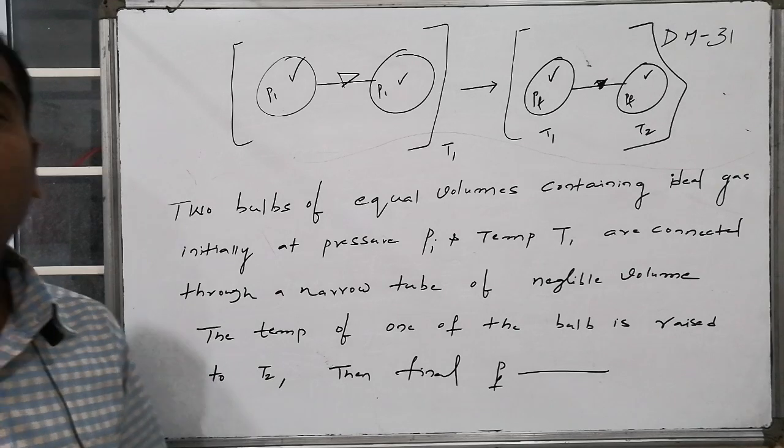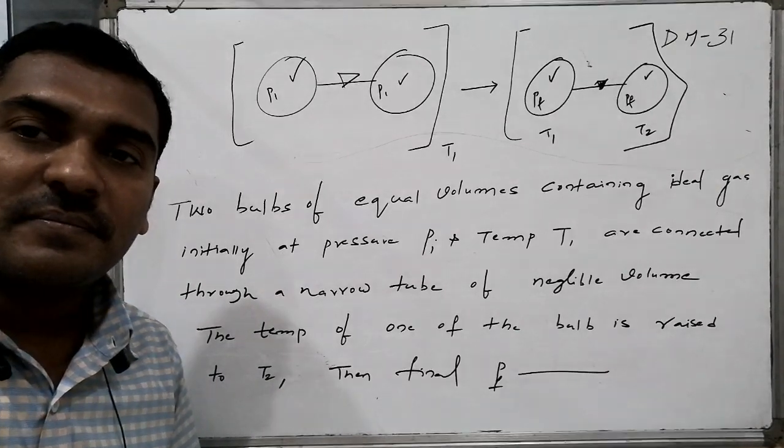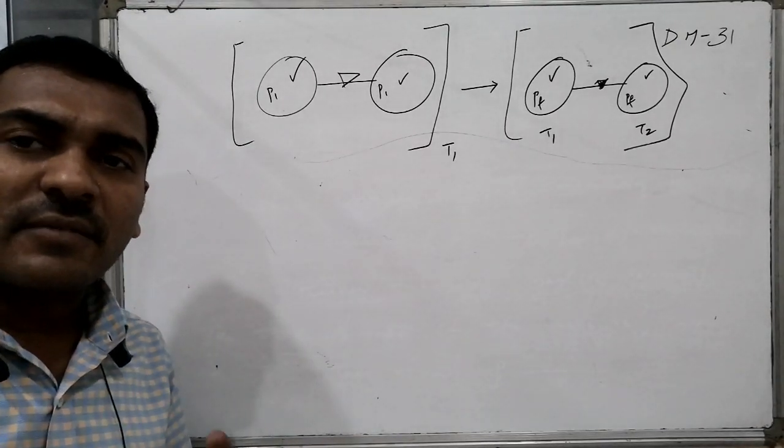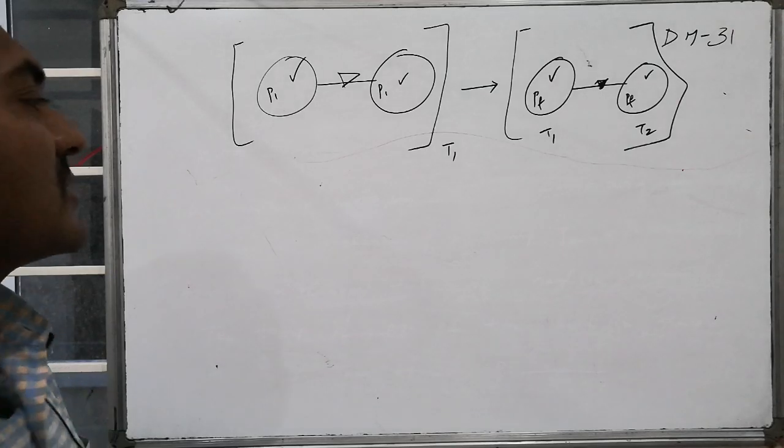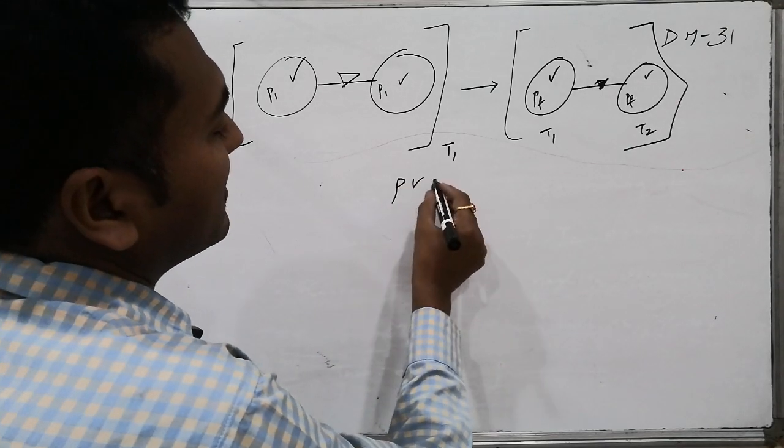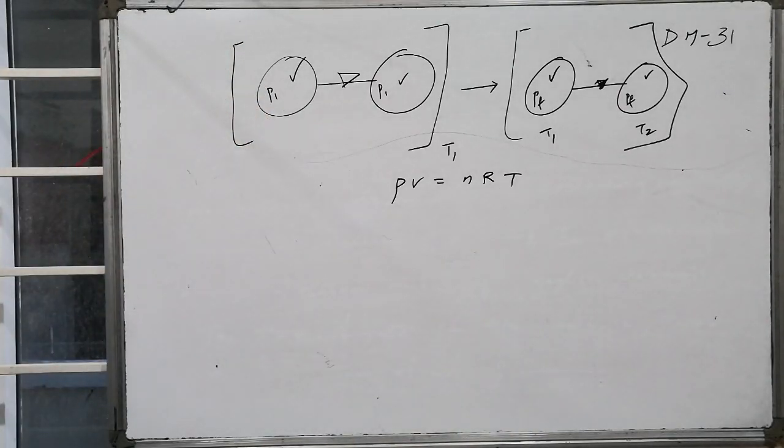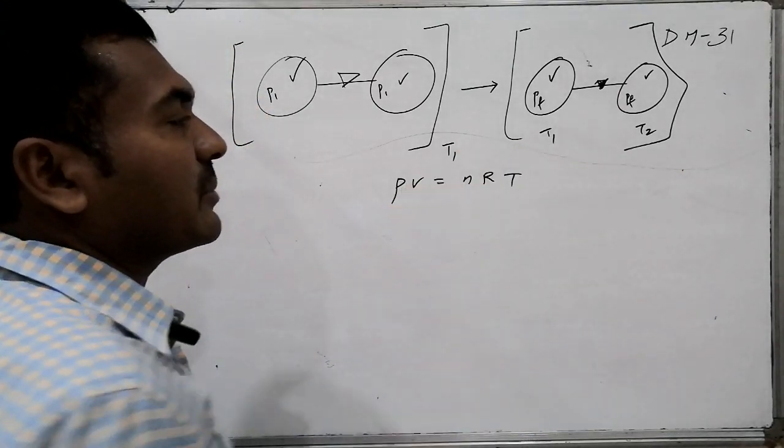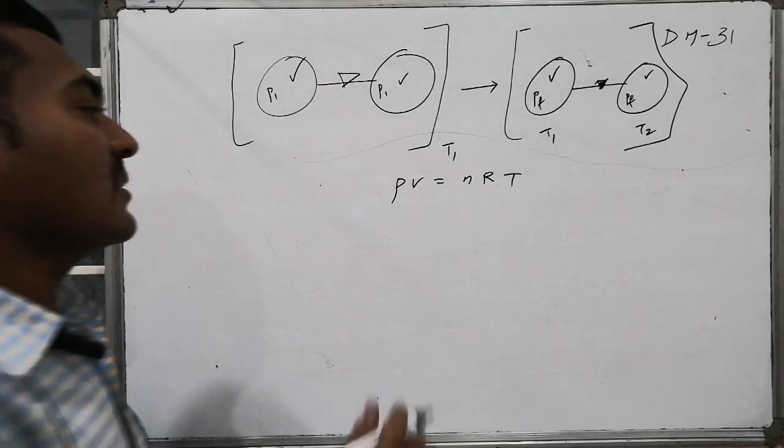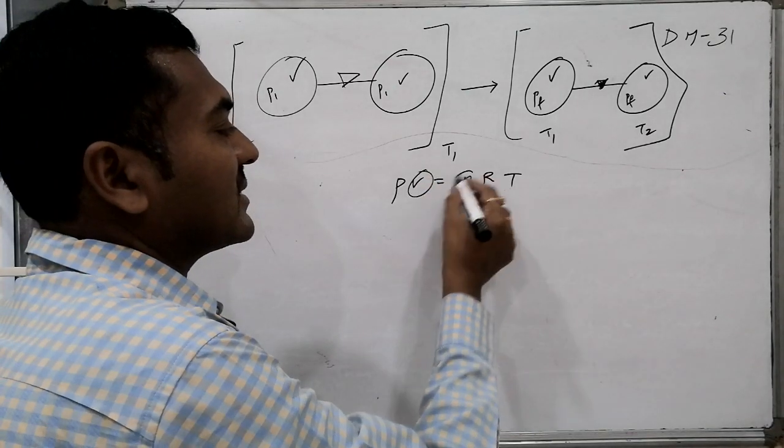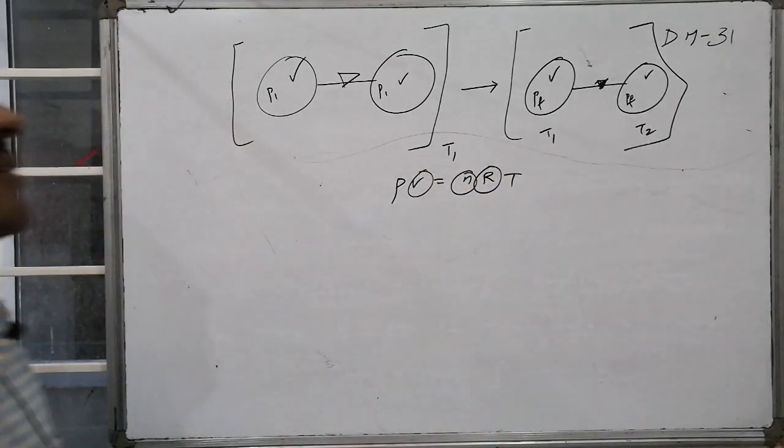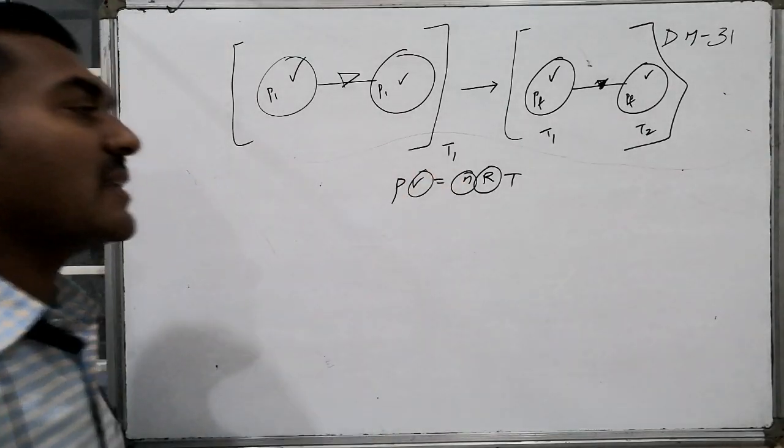This is an interesting question. To solve it, we use the ideal gas equation: PV = nRT. Here, volume remains constant and the number of moles in the system remains constant, whereas temperature and pressure vary. So it is better to consider number of moles.